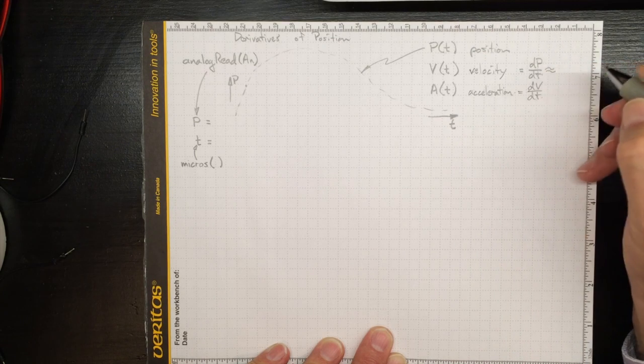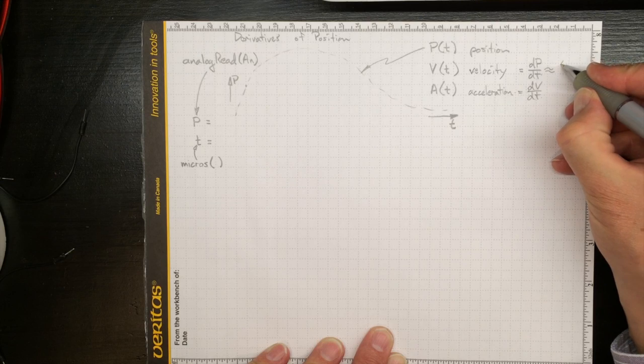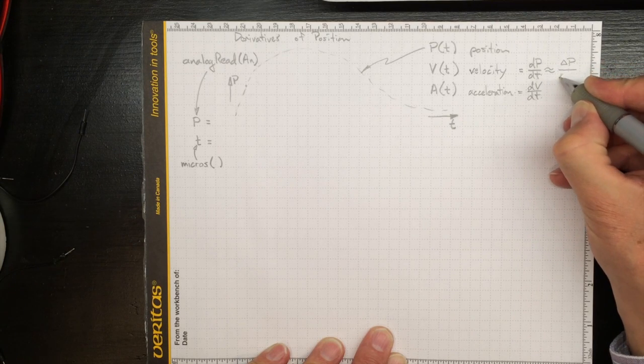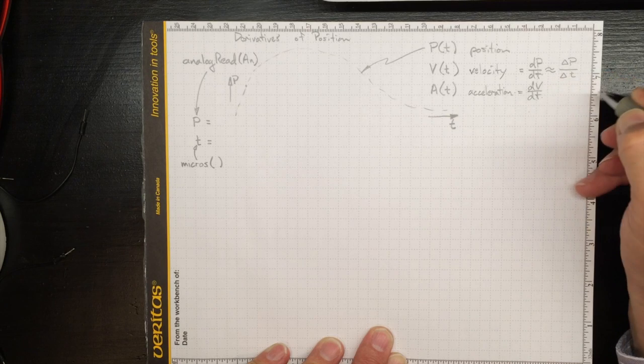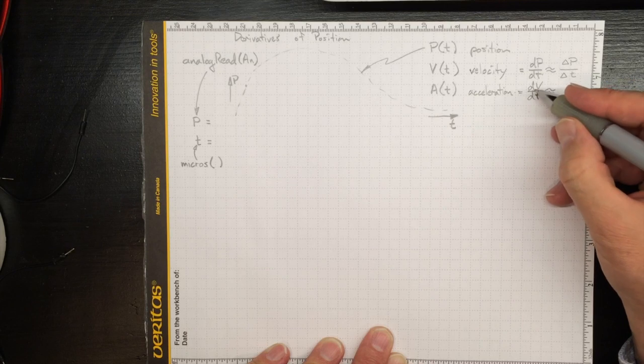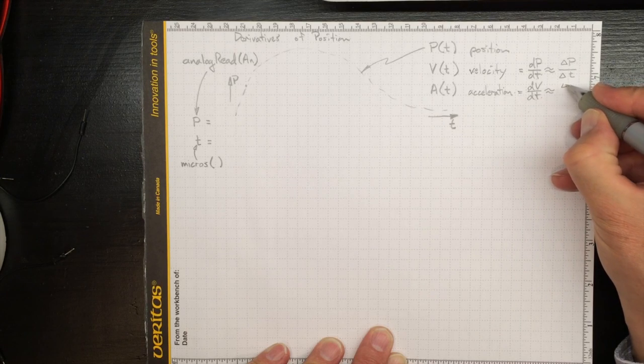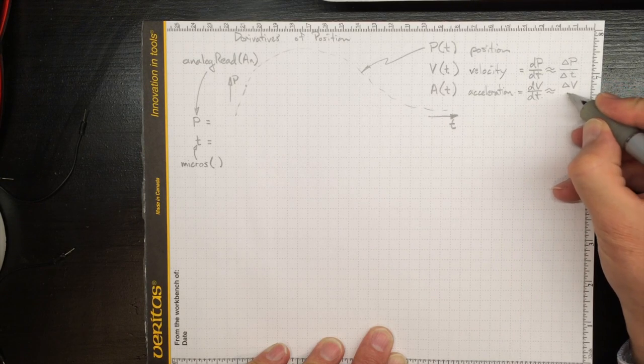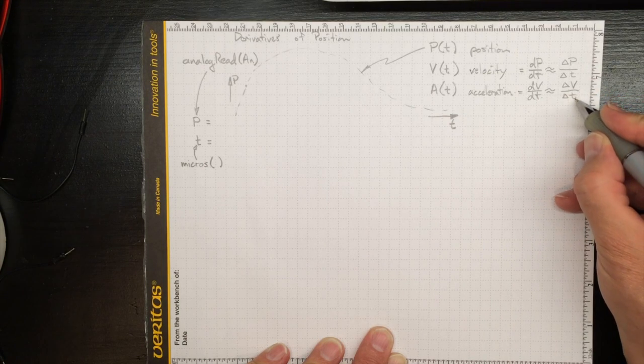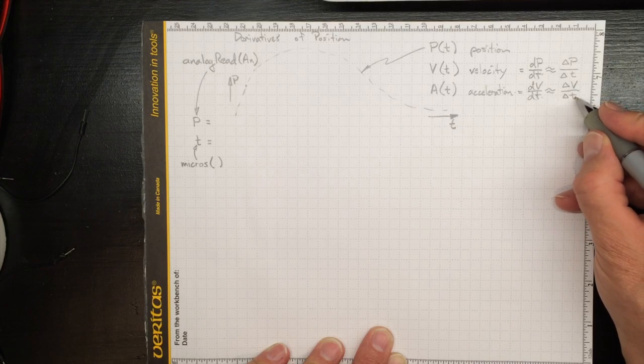So that derivative will be approximately the amount that the position changes divided by the length of time it took to change. This derivative will be approximately the amount that the velocity changes by and the time that the velocity took to change. And those we can estimate based on measurements.